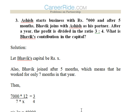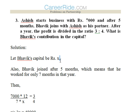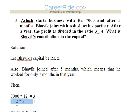Third question: Ashish starts a business with rupees 7000, and after five months Bhavik joins as his partner. After a year the profit is divided in the ratio 3:4. What is Bhavik's contribution to the capital? We don't know how much Bhavik contributed. Ashish contributed 7000 rupees for 12 months, so 7000 × 12. We assume Bhavik's contribution to be X, but he is there for only seven months, so 7 × X.